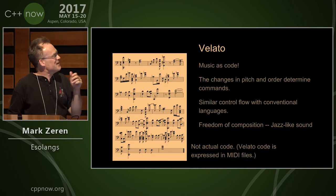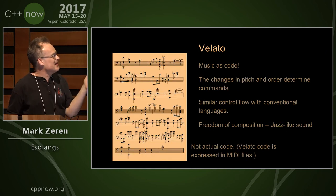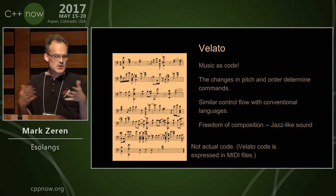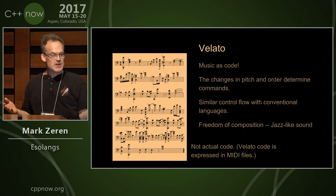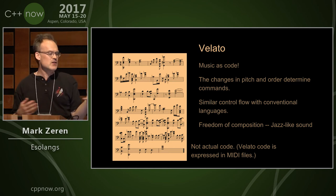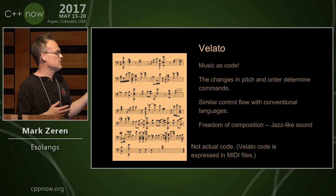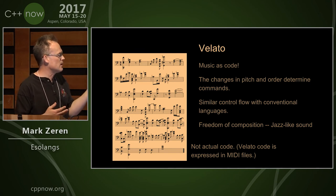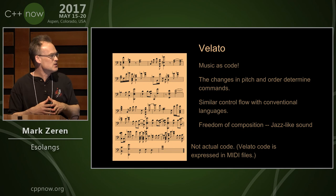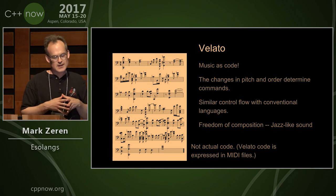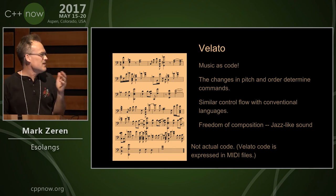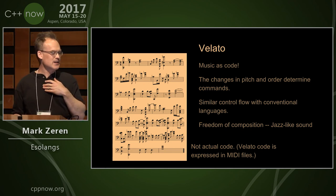The next one is Velato, where the instructions are encoded in a MIDI file. This has relatively straightforward control flow — it's a normal language — but it has the handy feature of being able to print out in score form. Some people say that it sounds a little bit like jazz.